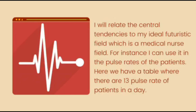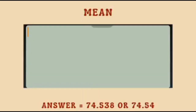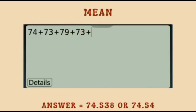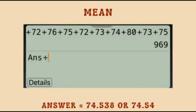This is the result. A: 74, B: 73, C: 79, D: 73, E: 72, F: 76, G: 75, H: 72, I: 73, J: 74, K: 80, L: 73, and M: 75. Now let's find its mean. We will add all the given values then divide by the total number of items in the set. The total is 969, divided by 13, so the average is 74.538 or 74.54.